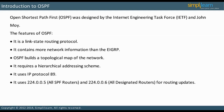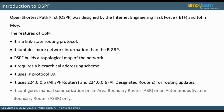OSPF uses 224.0.0.5, all SPF routers, and 224.0.0.6, all designated routers, for routing updates. Manual summarization can be configured on an area boundary router, ABR, or an autonomous system boundary router, ASBR, only. This compares to EIGRP, where manual summarization can be configured on any router interface. Let us configure OSPF in the next slide.